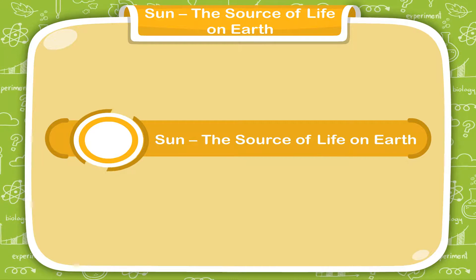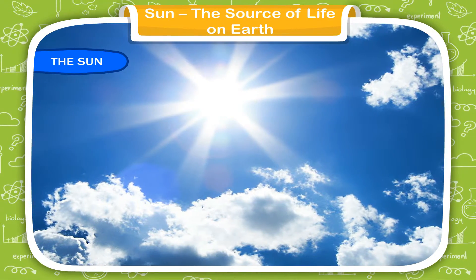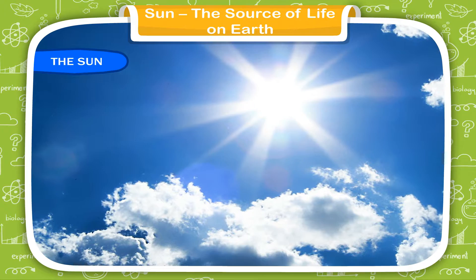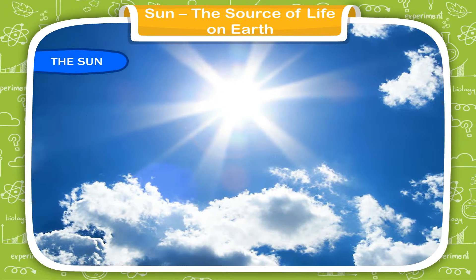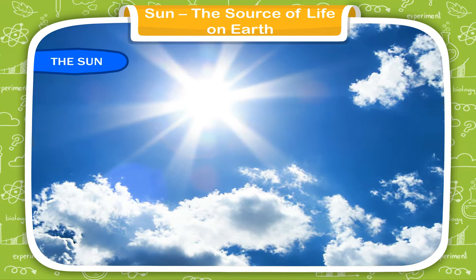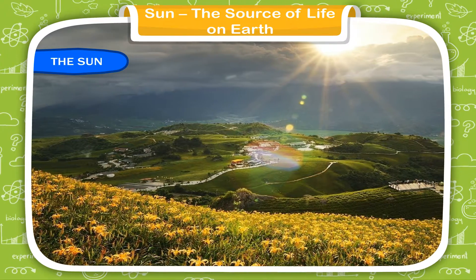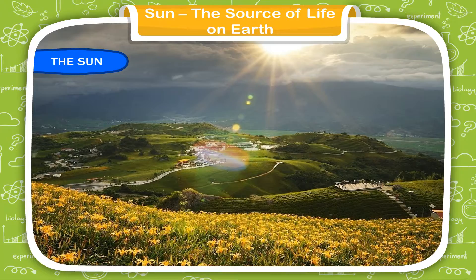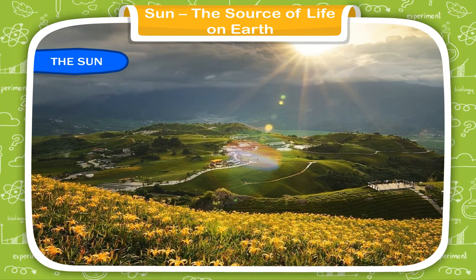Sun, the source of life on earth. The sun is the brightest object in the sky. It is a huge ball of hot gases. The sun is the closest star to earth, although it is too far away from us. No life is possible on earth without it. The sun is the main source of energy for all living things in the world.